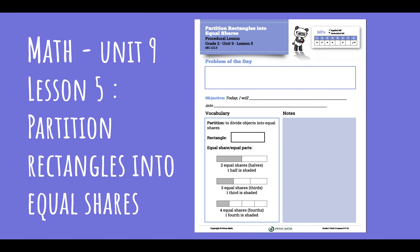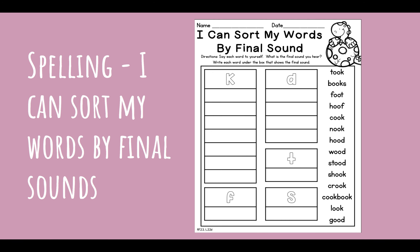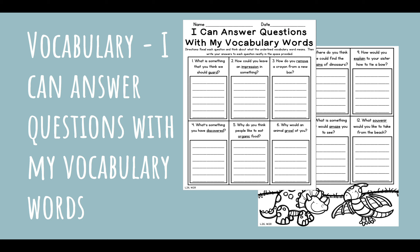For math, Unit 9, Lesson 5 is partition rectangles into equal shares — we will be continuing our fraction unit. For the journal entry, you're first going to draw a picture of yourself learning about ancient animals, and then you'll be doing a little bit of writing. Then for spelling, the objective is: I can sort my words by final sounds. This is the activity page that accompanies it — all you're doing is sorting your words into the proper box or proper column.